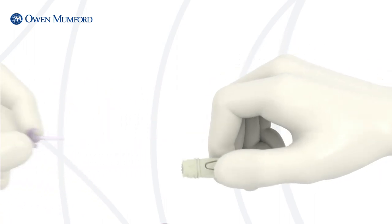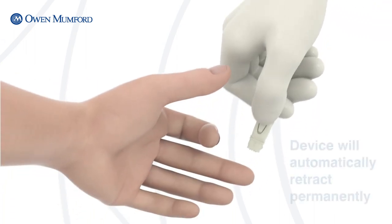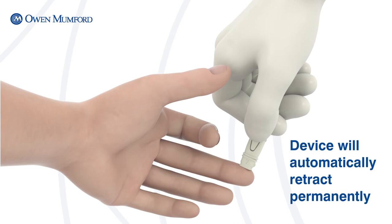Next, gently press the lancet platform against the sample site. To activate, press the side trigger button.